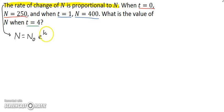The really good news is that in this case, they told me what happens when t is 0. They told me that n is 250. So, I can let t be 0 and n be 250, and I can see what's going on. So, 250 would have to be n sub 0, e to the k times 0. Again, when t is 0, n is 250.